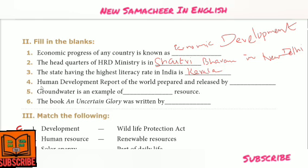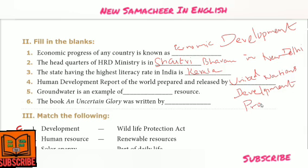Fourth question: Human Development Report of the World is prepared and released by — Answer: United Nations Development Programme. Fifth question: Groundwater is an example of dash resource — Answer: Renewable Resource.